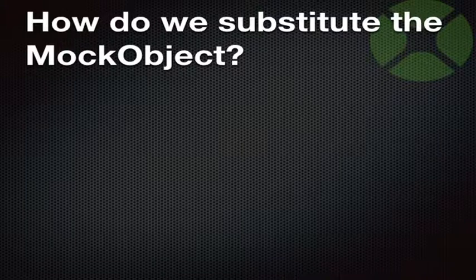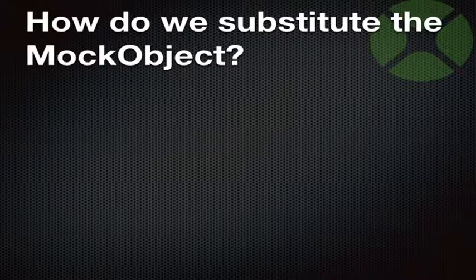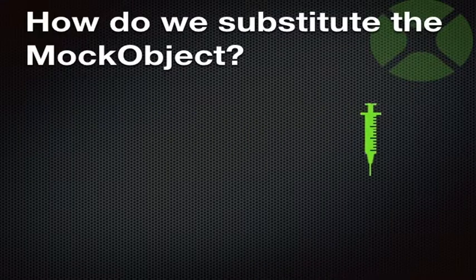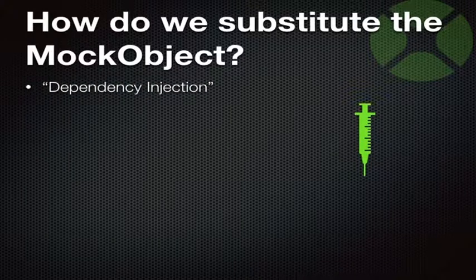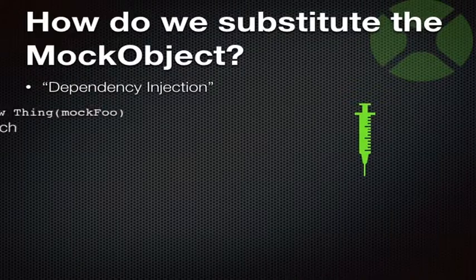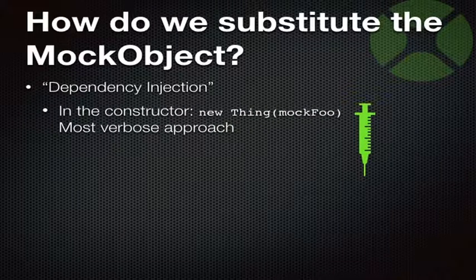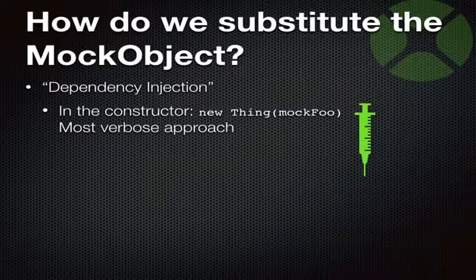How are we going to substitute the mock object for the real object when running tests, especially for something as important as the database? The technique has a somewhat unusual name — dependency injection. When I read up on it I said: oh, that! I've been doing that forever. Basically, we have to tell the object at some point: this is your dependency now, this is the database you're going to be using. You can do it in the constructor — whenever we create an invoice, we tell it where its database is.